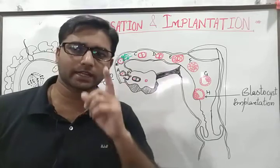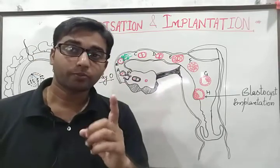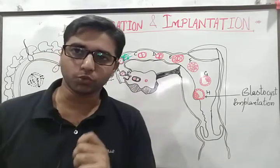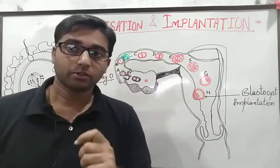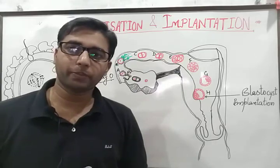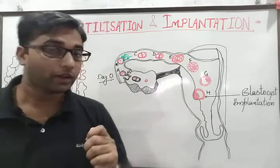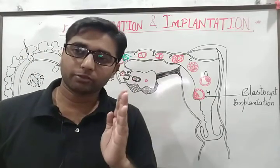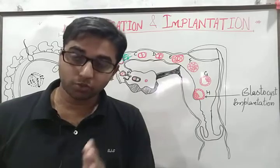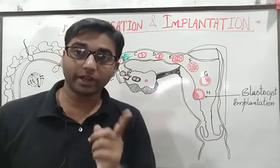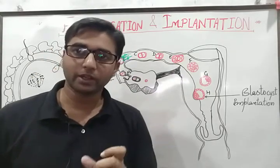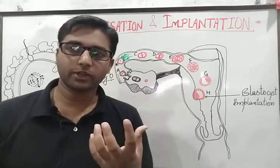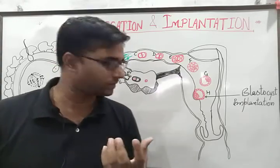The mature egg is arrested at metaphase II of meiosis. It only proceeds further through meiotic division when it is fertilized by the sperm — that is, the male gamete. When the egg is fertilized by the male gamete, further meiotic division takes place; otherwise, it will be destroyed after 72 hours.